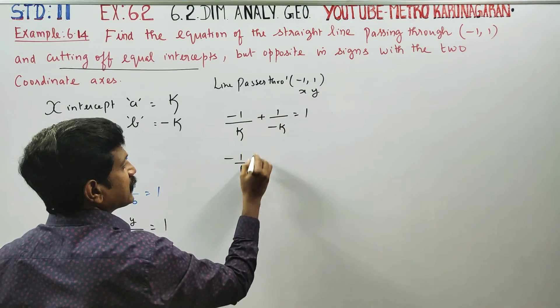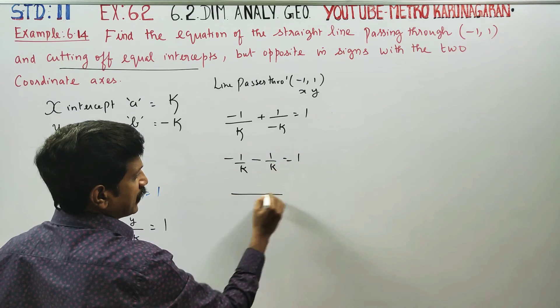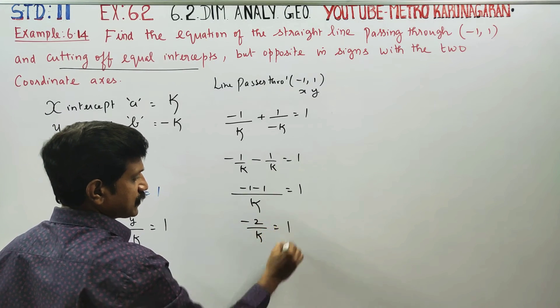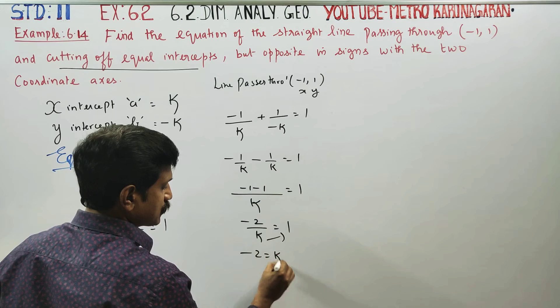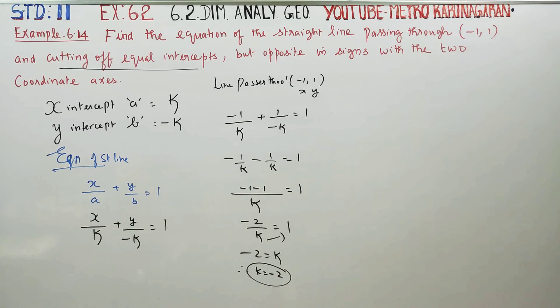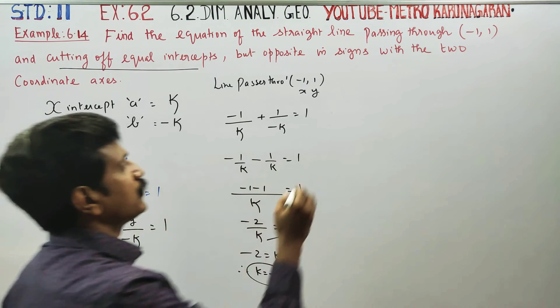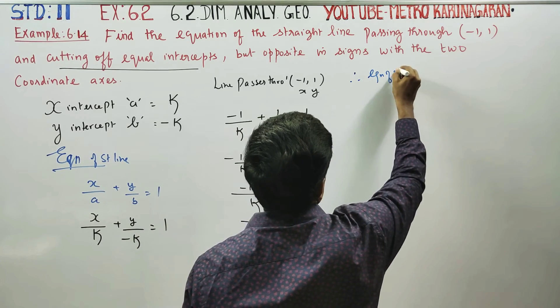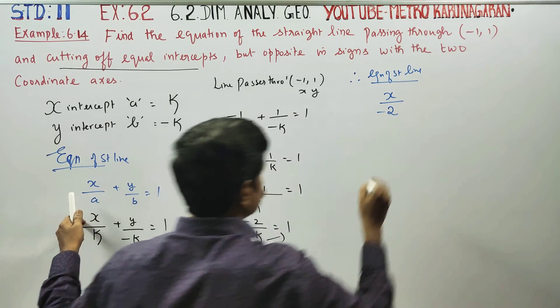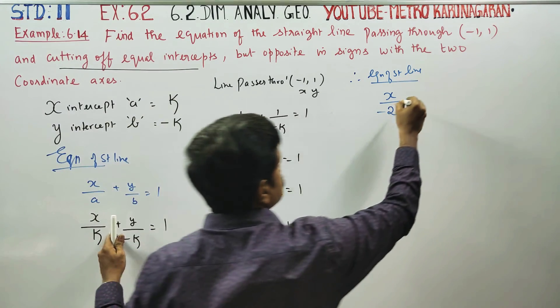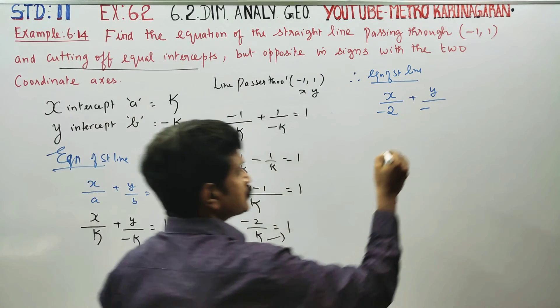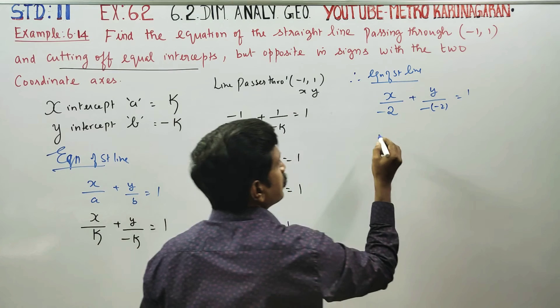Substitute x and y: minus 1 by k minus 1 by k is equal to 1. Take k as LCM: minus 1 minus 1 is equal to 1, so minus 2 by k is equal to 1. Cross multiply: minus 2 is equal to k, or k is equal to minus 2.